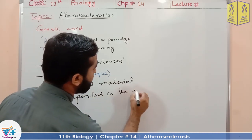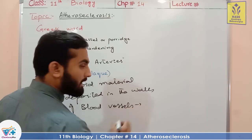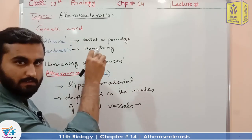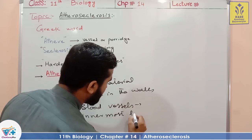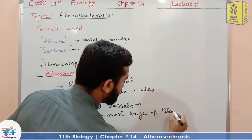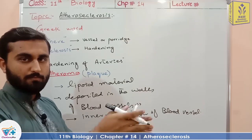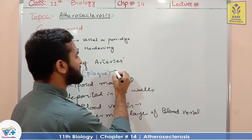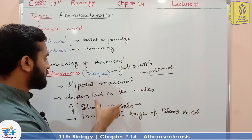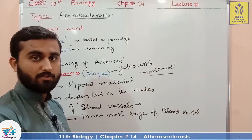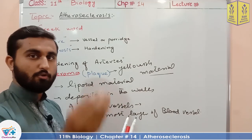This material is accumulated in the innermost layer of blood vessels, especially in the lining of the endothelium, or in the middle layer where smooth muscles are present. The plaque is a yellowish material, as fat appears yellow. This cholesterol or lipoid material is especially deposited in advanced age as we grow older.